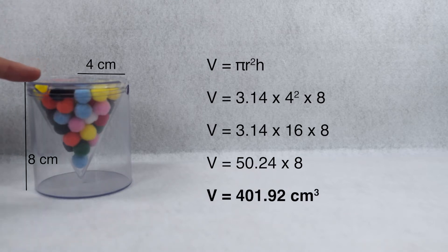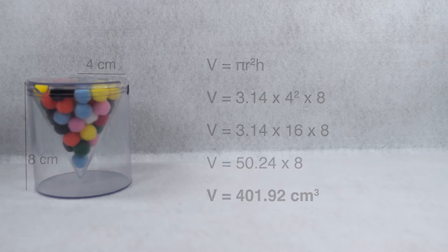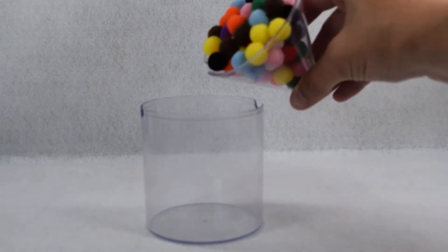Now when we compare that to the cone, we can see that the cone is only going to take up a fraction of the cylinder. The question is, what fraction of the cylinder's volume is it going to take up? We've filled our cone once, and we're going to pour it into the cylinder.